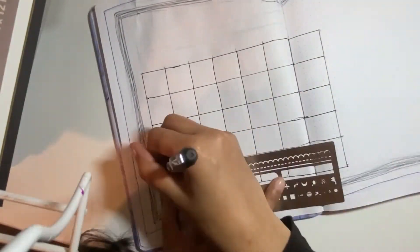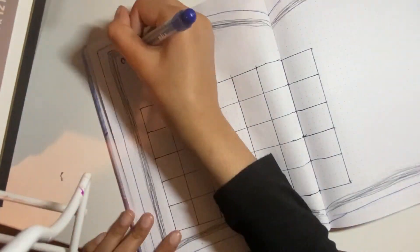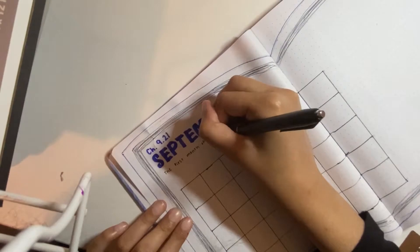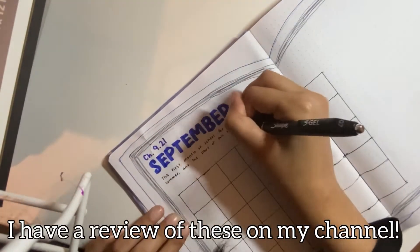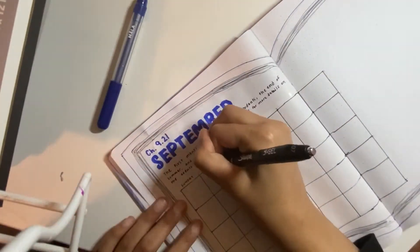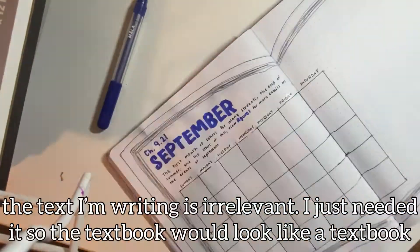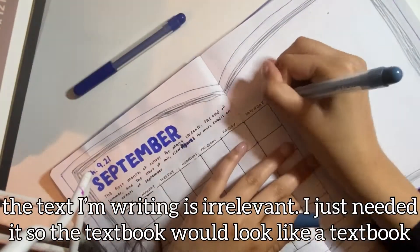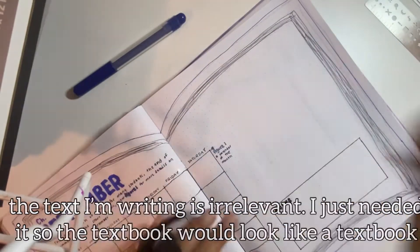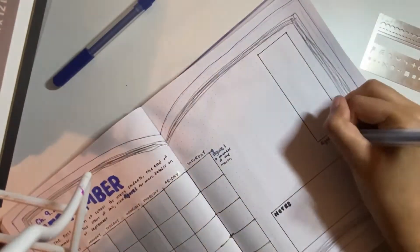My third tip would be to create a system that works for you organizationally. So depending on which level you are in, maybe your teacher is telling you what you need, like you need a binder or you need a folder or you need that. But if they're giving you the freedom to choose, definitely choose. Because more likely than not, you're going to need a folder or a binder. Depending on which one you like, that's up to you. But you're going to need a place to keep your papers.